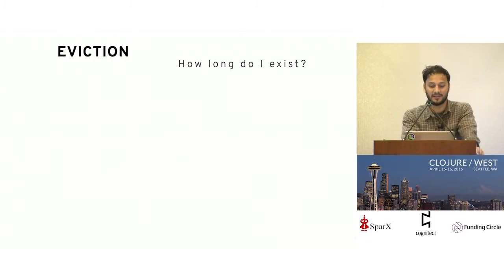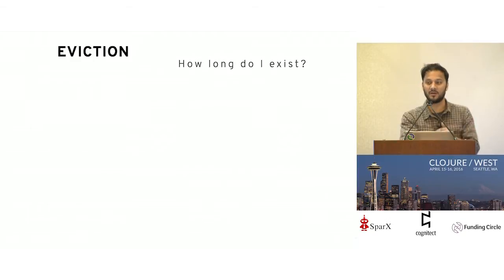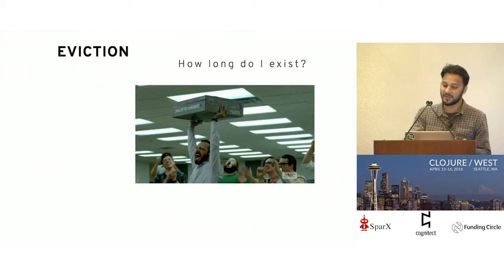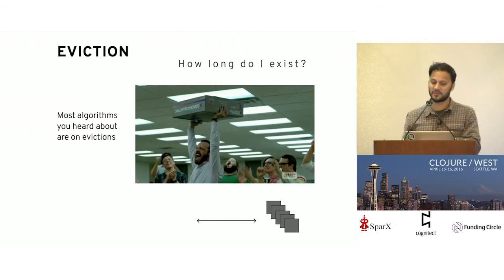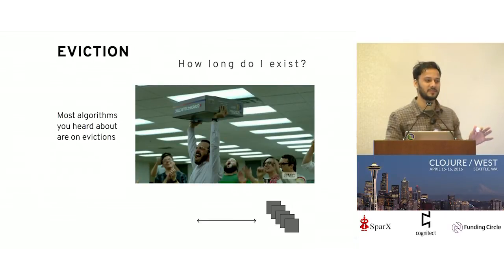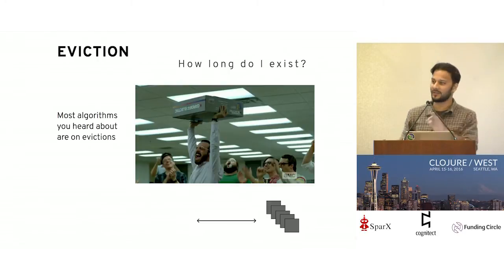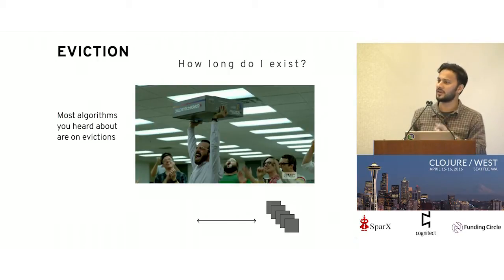Eviction, on the other hand, is asking a question that comes after the fact of invalidation: how long do I exist? — where 'I' is a cache segment. It seems like most algorithms I've found in research focus on evictions. If you look up cache algorithms, you'll get LRU all the way to LIRS. But most of these algorithms are focusing on optimizing the space — optimizing the memory.